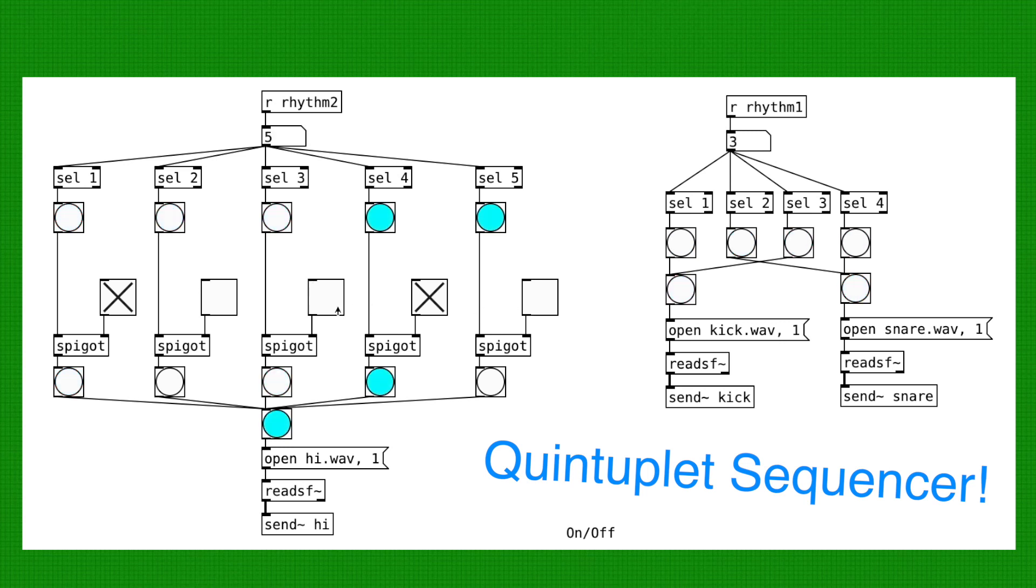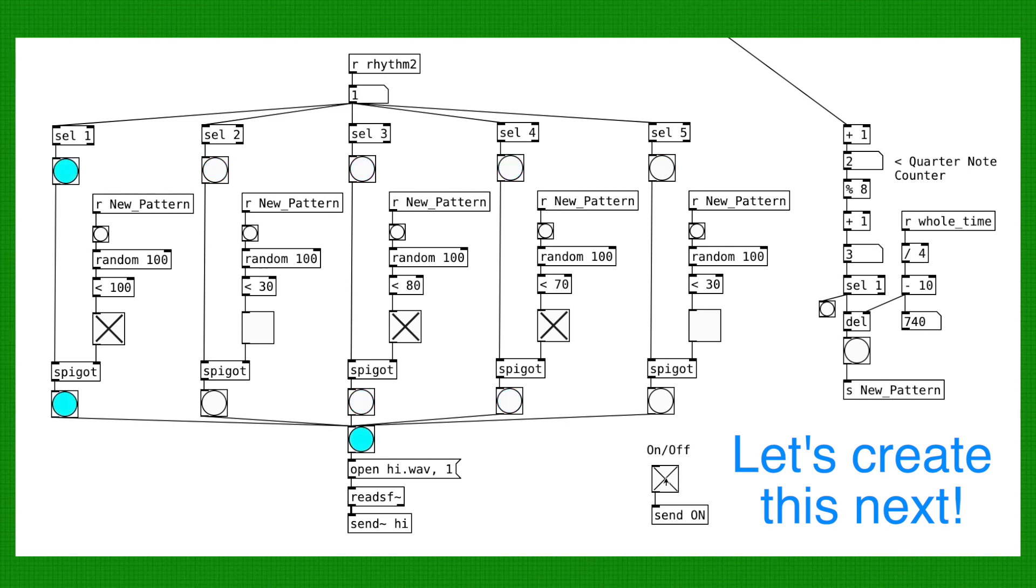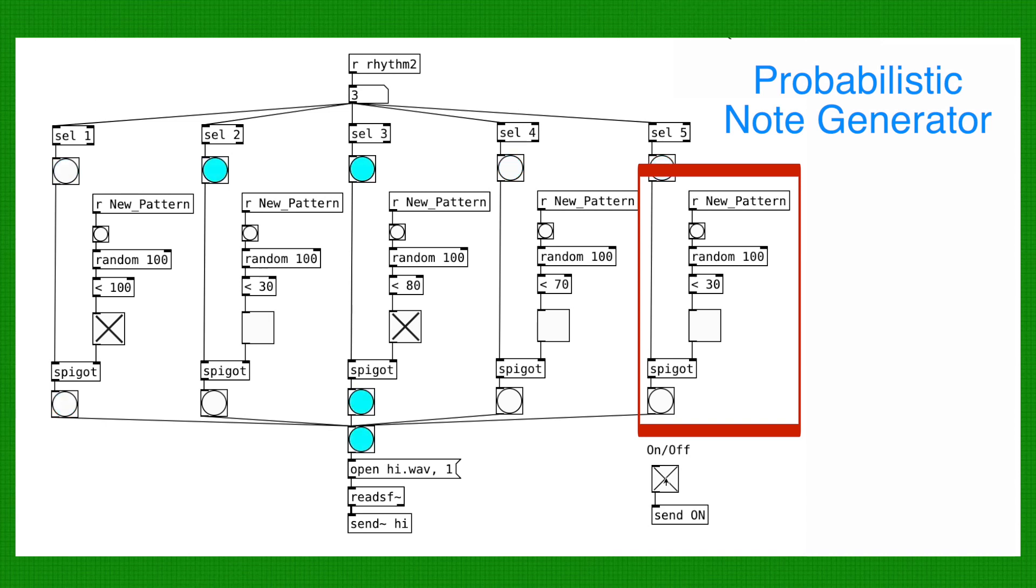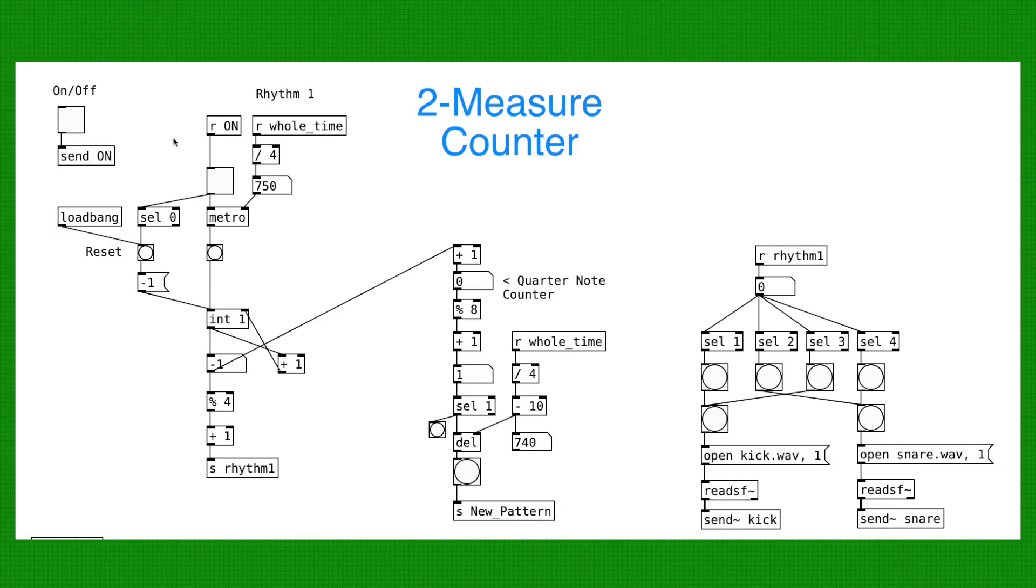And to make this patcher even more exciting, let's make it generative. Let's generate a new pattern every 2 measures. So these are the pattern generator algorithm. It's using a random number generator, probability, and the gate to decide if a note is played or not. And the bang message is sent from here.